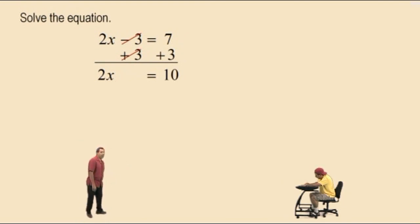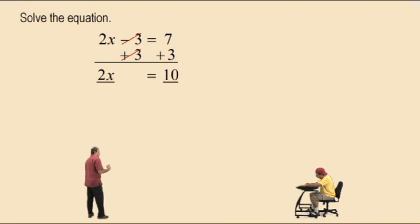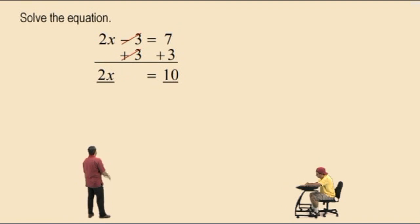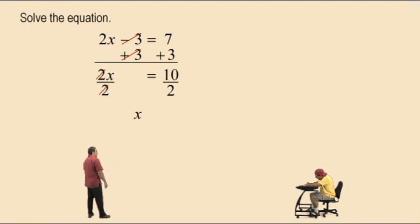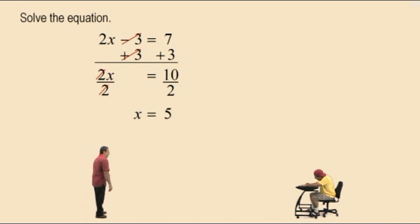All right. Now we have 2x equals 10. Now, Charlie, what do we do to get x isolated? In other words, what do we do to get 1x? Divide both sides by 2. That's right. Divide both sides by 2 because 2 divided by 2 is 1, and that's 1x, and 1x equals 5, and that is your answer.